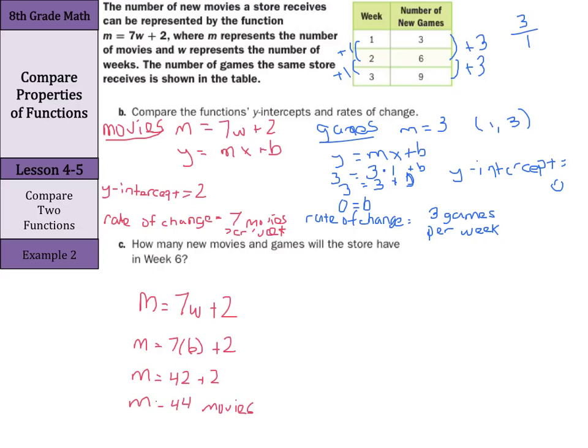And now that we have our slope of 3 and a y-intercept of 0 for our games, we can come up with an equation in that y equals mx plus b form to help us solve this part. We can say our y here is our games. So games is going to equal 3 per week. And our y-intercept is 0. So, we can just say plus 0 or just leave it off. So, our games is going to equal 3 times 6. And our games is going to be 18 games. So, 44 movies and 18 games in week 6.